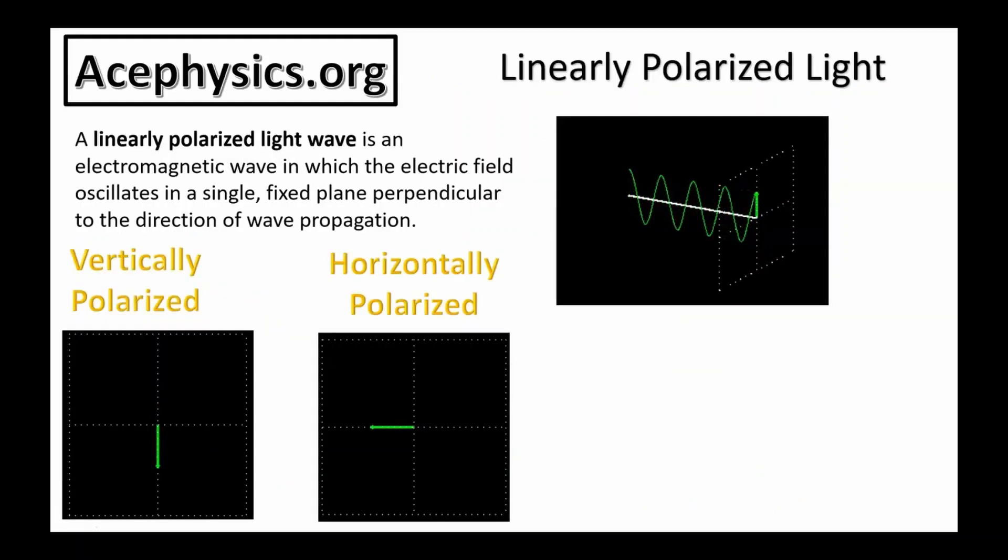On the next few slides, I have some animations to help visualize light polarization. A linearly polarized light wave is an electromagnetic wave in which the electric field oscillates in a single fixed plane perpendicular to the direction of the wave propagation.